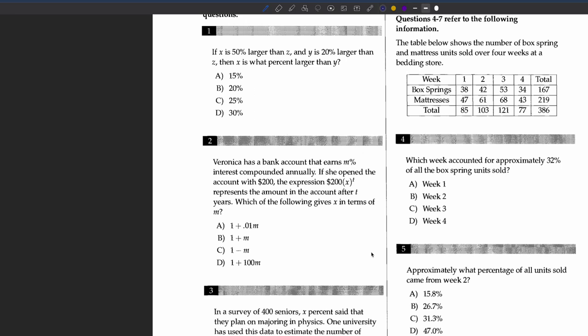Veronica has a bank account that earns m percent interest compounded annually. If you open the account with two hundred dollars, the expression 200(x^t) represents the amount in the account after t years. Which of the following gives x in terms of m?